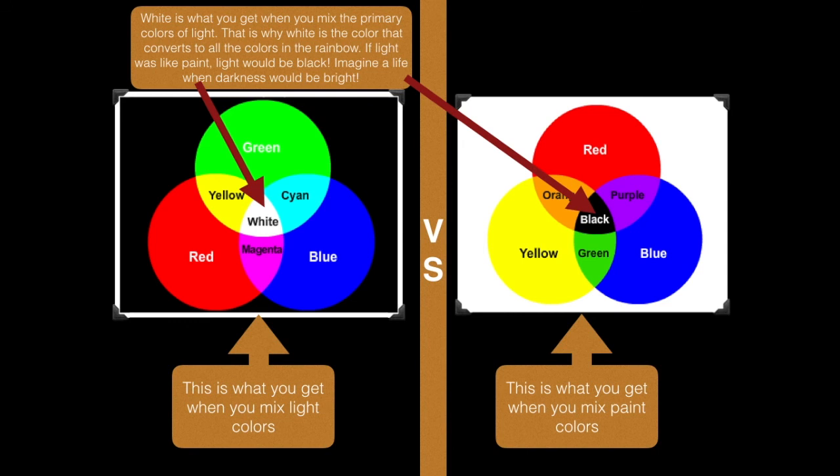What you get is when you mix the primary colors of light. That's why light is the color that converts into all the colors in the rainbow. If light was like pink, then light would be black. Imagine a light when darkness would be bright. This is what you get when you mix light colors. Have you seen that the primary colors actually change? The green is actually yellow and they change. And this is what you get when you mix paint colors.